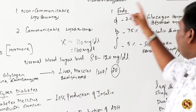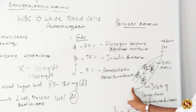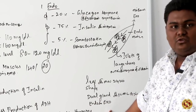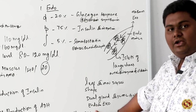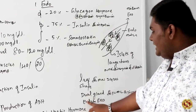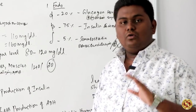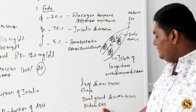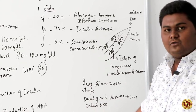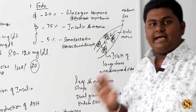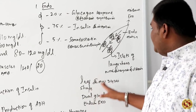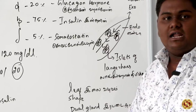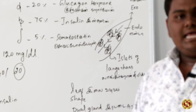The pancreas is a leaf-shaped organ. It is also called a dual gland. It acts as both endo and exo. Endo means it secretes hormones and cells. Exo means it secretes enzymes and acids. The inner part is called Endo and the outer part is called Exo. The inner structure is called the Islets of Langerhans, which secretes hormones and enzymes in the human body.